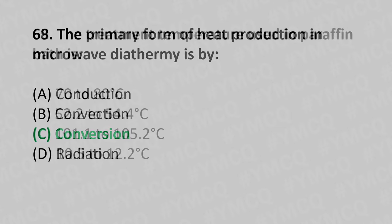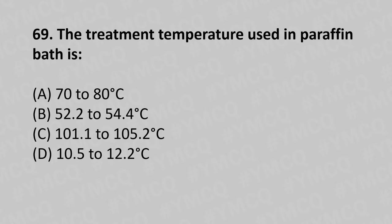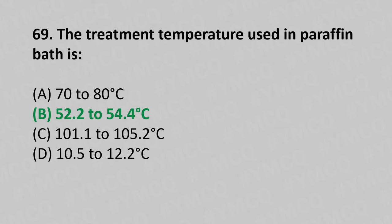Moving to our 69th question. The treatment temperature used in paraffin wax bath is: Option A, 70 to 80 degrees Celsius; Option B, 52.2 to 54.2 degrees Celsius; Option C, 69 degrees Celsius; Option D, 10.5 to 12.2 degrees Celsius. And the answer is Option B, 52.2 to 54.4 degrees Celsius.